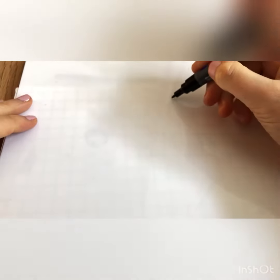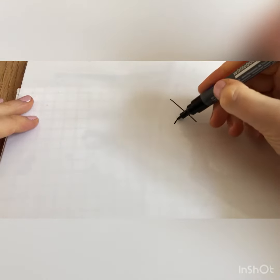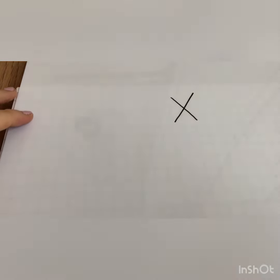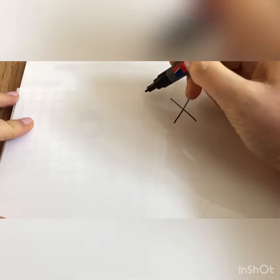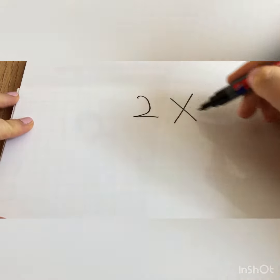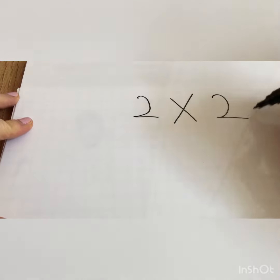Today we're going to be having a look at a new topic in maths and the topic is all going to be about multiplication. This is the symbol for multiplication and we often see it in a question like this. Two multiplied by two.